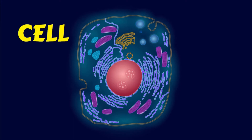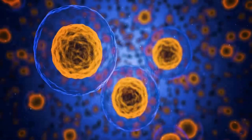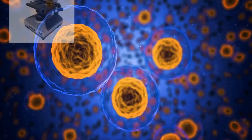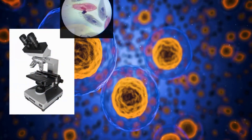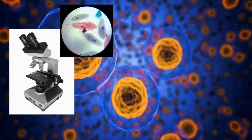By the way, you can re-watch the previous video lesson to better understand the topic today. We learned that a microscope enables us to see small things because of its ability to magnify.